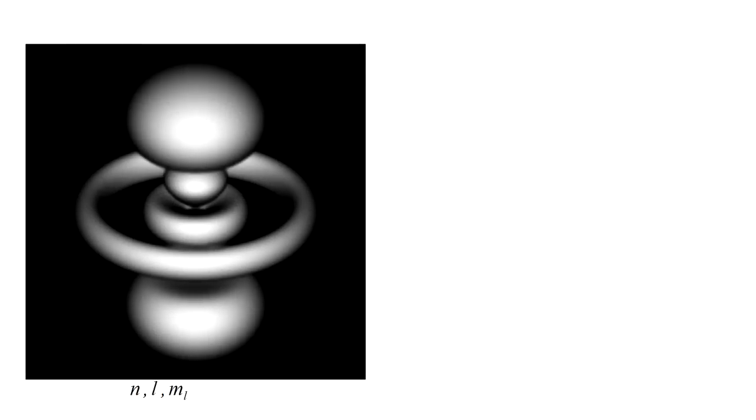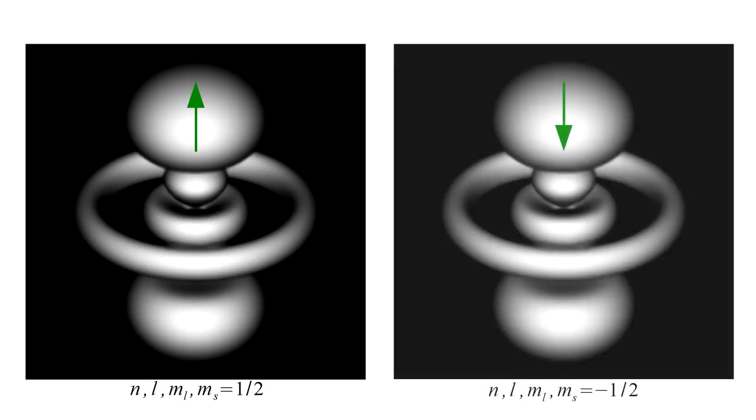So an orbital with given values of n, l, and m sub l can hold one electron with m sub s equals one half, and one electron with m sub s equals minus one half. That is, each orbital can hold two electrons.